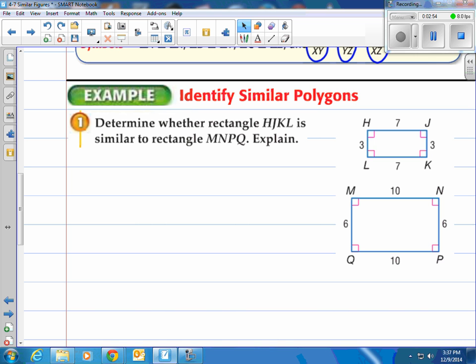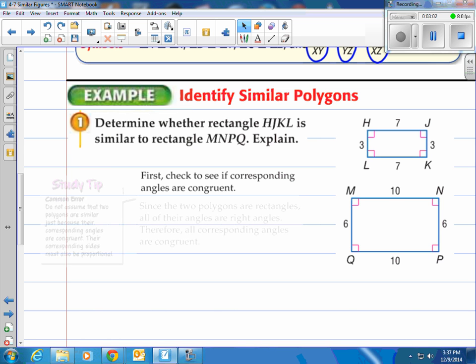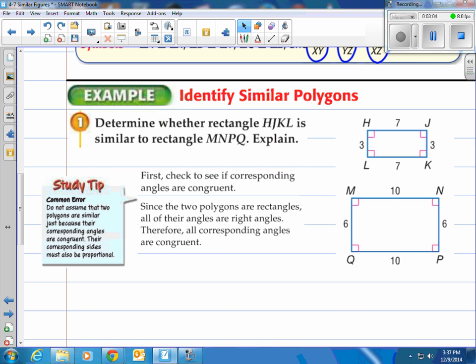First, we see that the angles are all the same. That's what we check first. You can see that right there. They're all right angles. Since the two polygons are rectangles, all their angles are right angles. Therefore, all corresponding angles are congruent. You can't stop there. Look at the student tip. Common error is you can't assume the two polygons are similar just because their corresponding angles are congruent. Their corresponding sides must also be proportional.